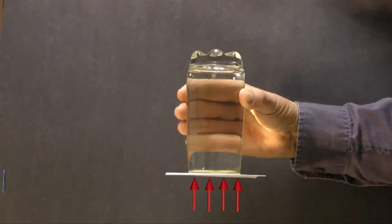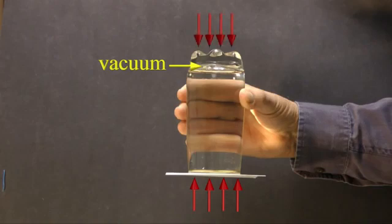Air pressure is not pushing down on the water because there is a vacuum at the top of the water. Air pressure is pushing on the outside of the glass, but this does not affect the water. The only downward force from the water is its weight. The upward force of air pressure easily supports the weight of the water.